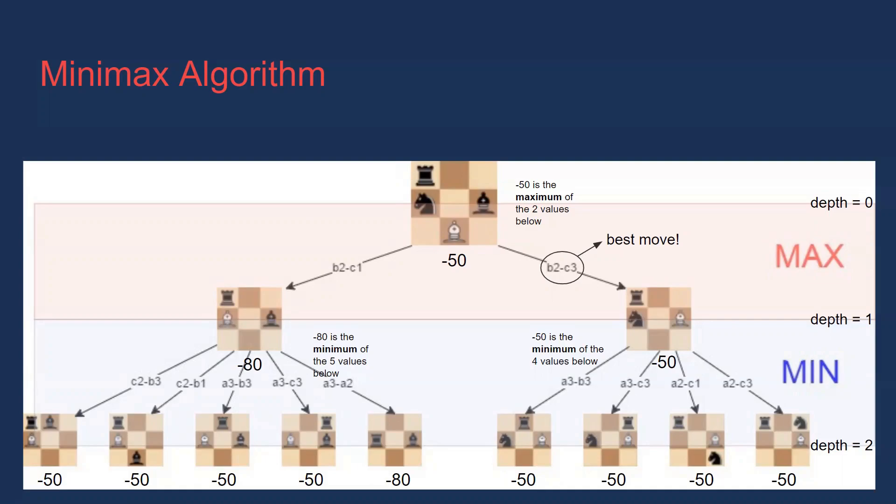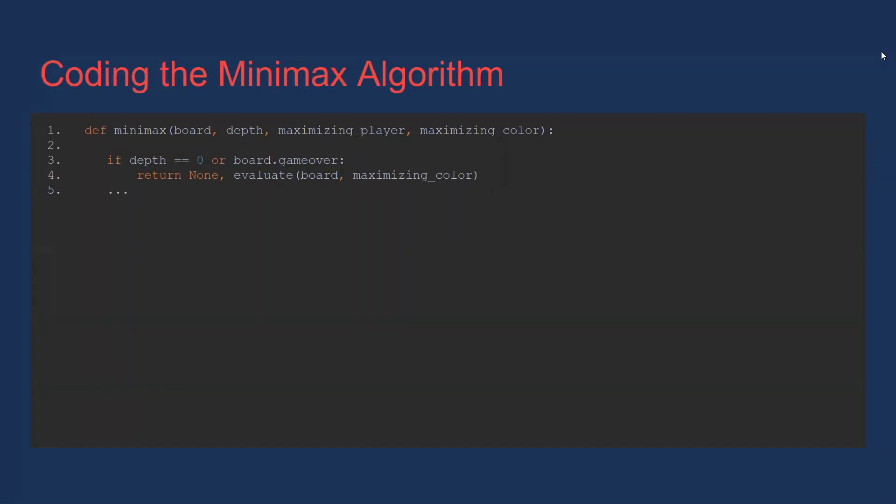I'm going to go through these pretty quickly, so feel free to pause the video to make sure you get everything. Here, we check if the depth limit has been reached, depth equals zero, or the game has ended, board.gameover. This is our base case where we evaluate all the game states at the lowest level so that we can start passing values up the tree.